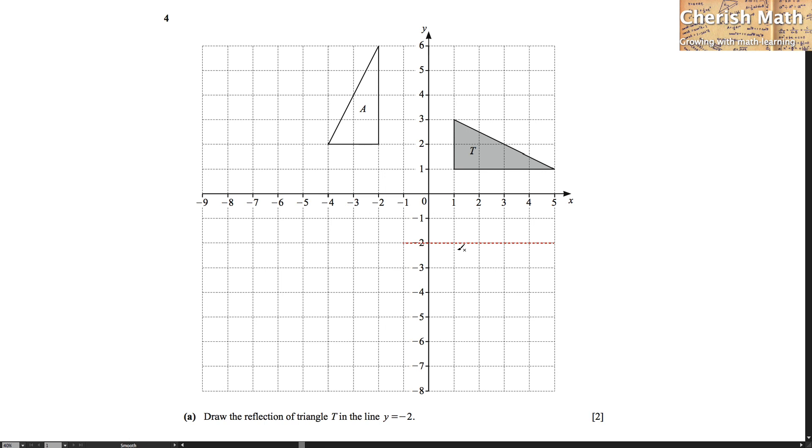We are dealing with the first vertex of triangle T here. This vertex is one, two, three units away from the line y equals negative 2. So the image of this vertex will take three grids from this red line: one, two, three. It landed here.